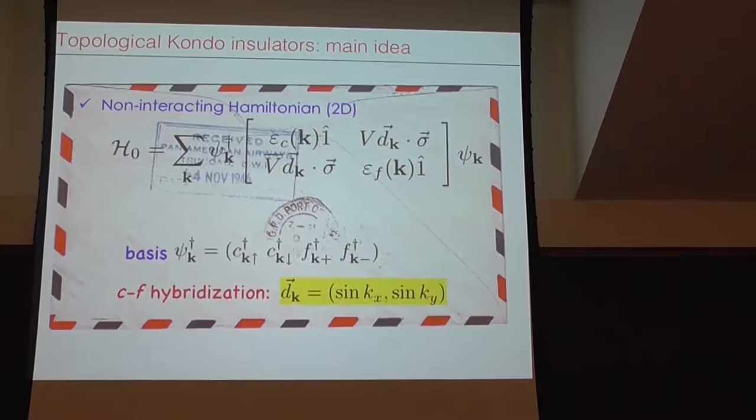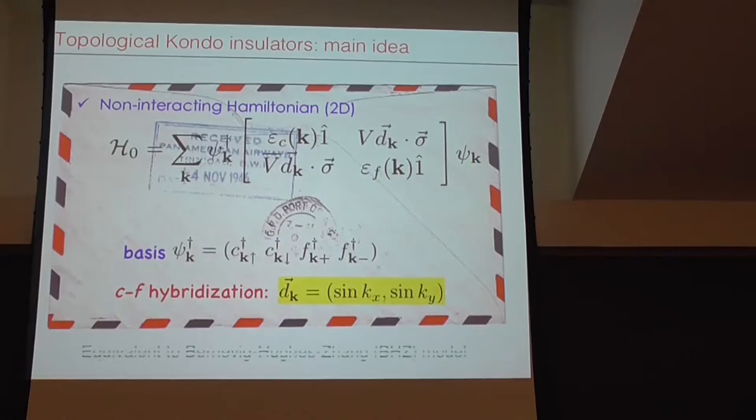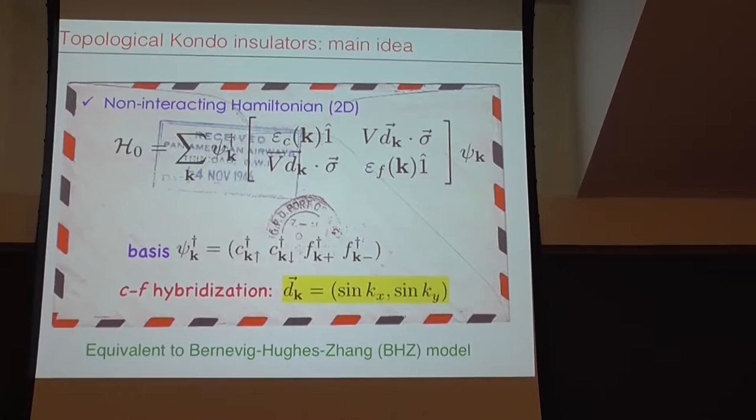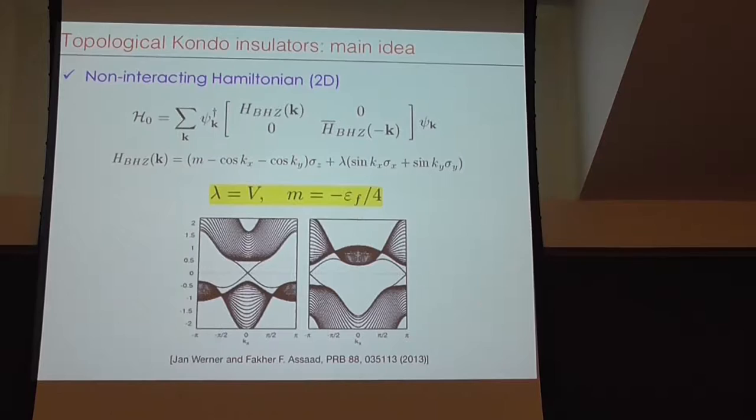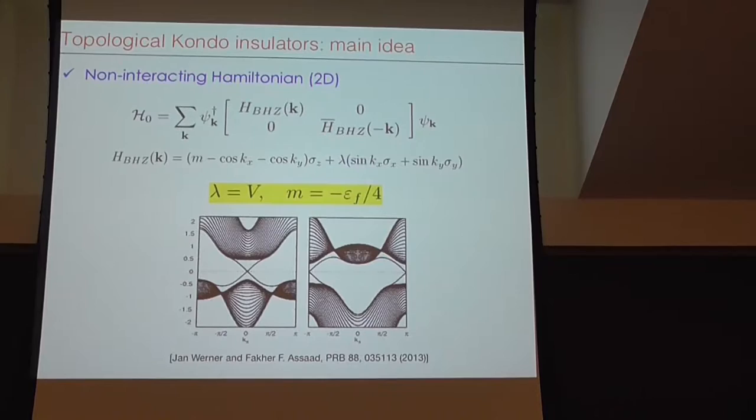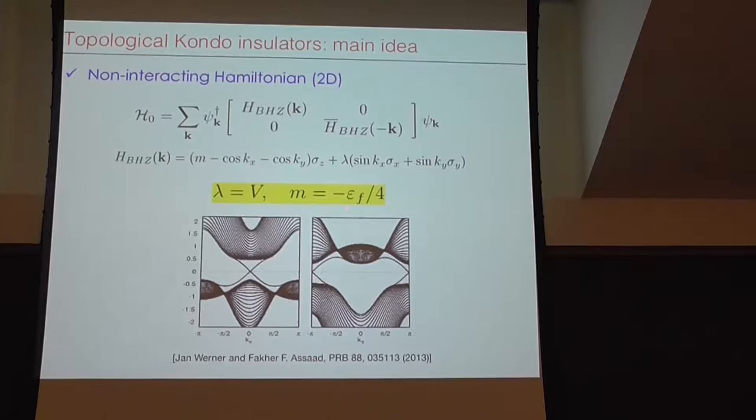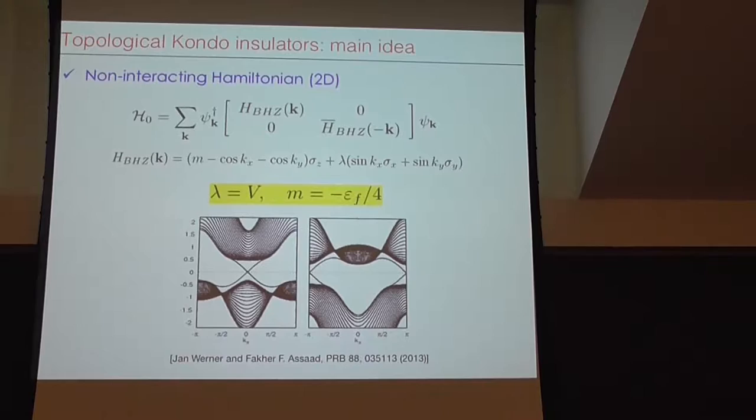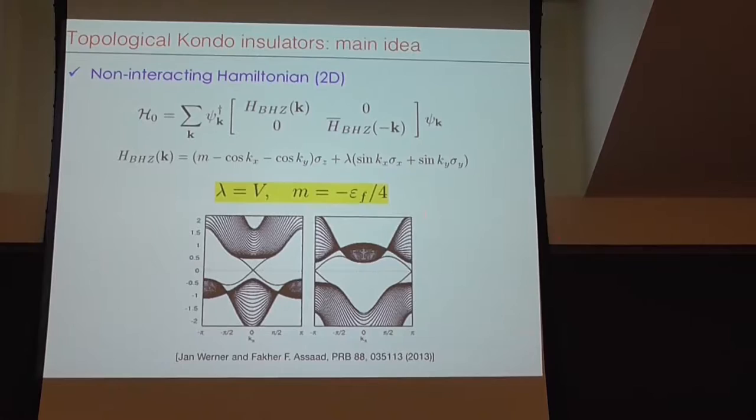To put our discussion at a more quantitative level, to see whether indeed there is an effect, we can start with something very simple. You can forget, ignore completely interactions, and think about the 2D model. The idea is that you put the conduction band, you put the F electrons, and then you couple them between each other. The key point here is that this hybridization matrix element which couples them together is necessarily k-dependent.